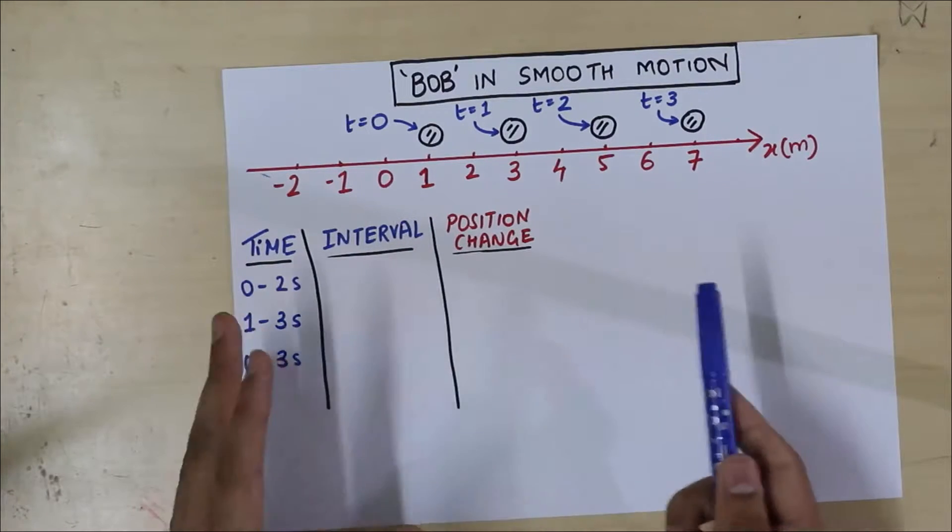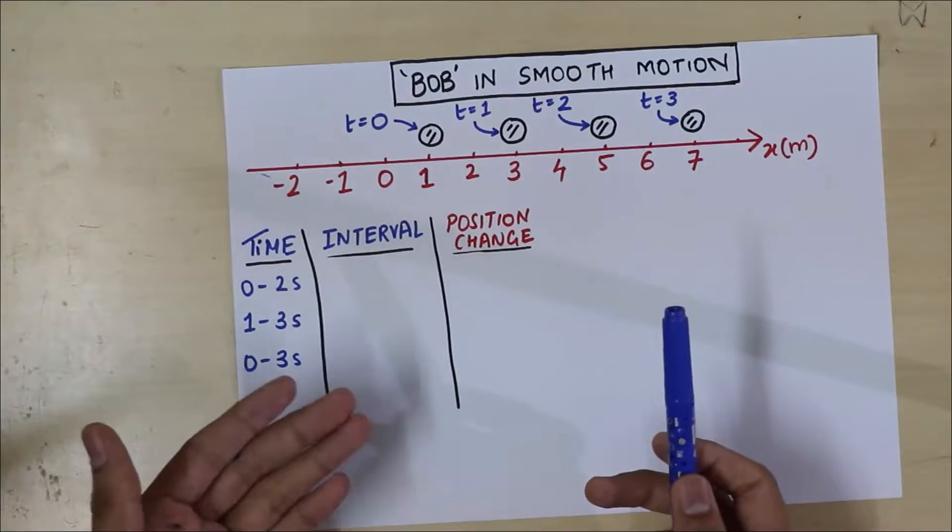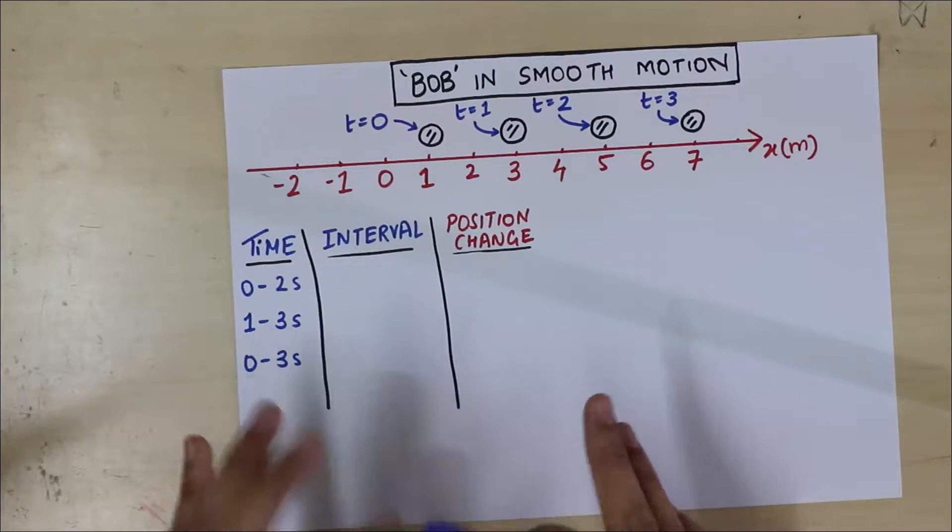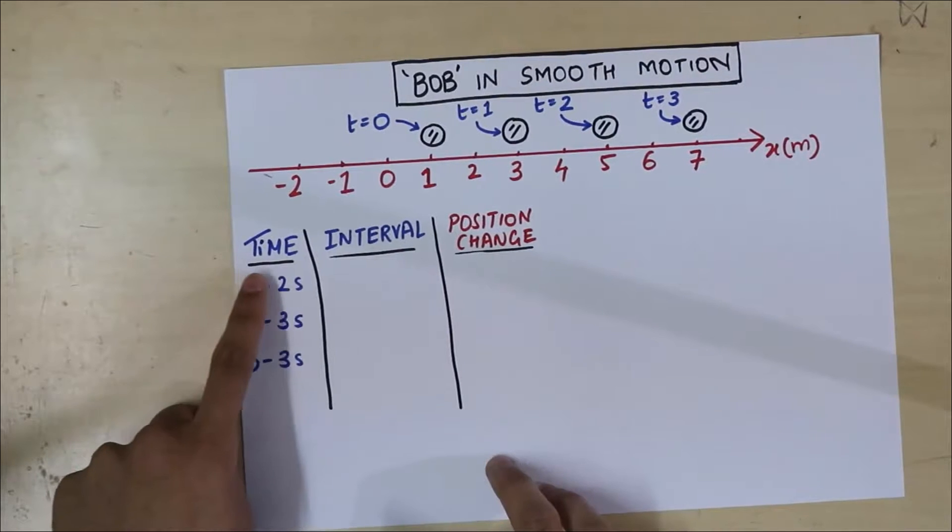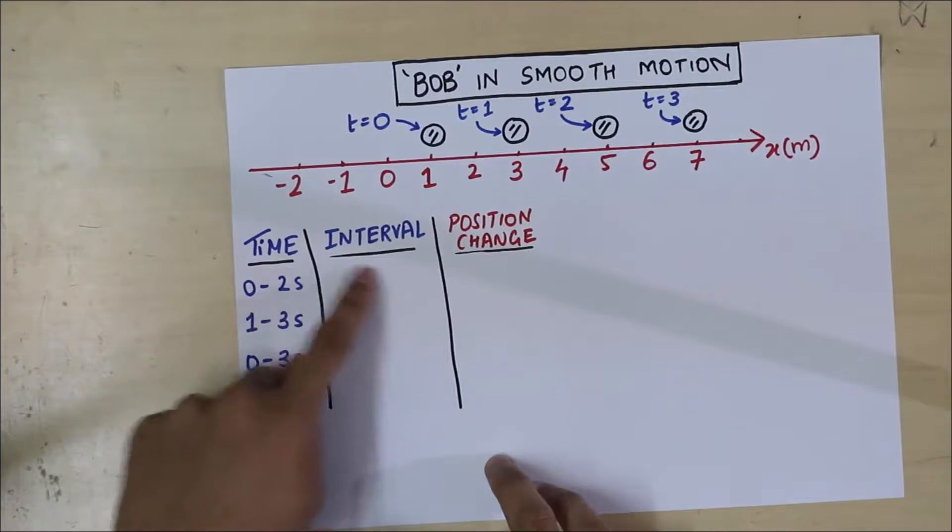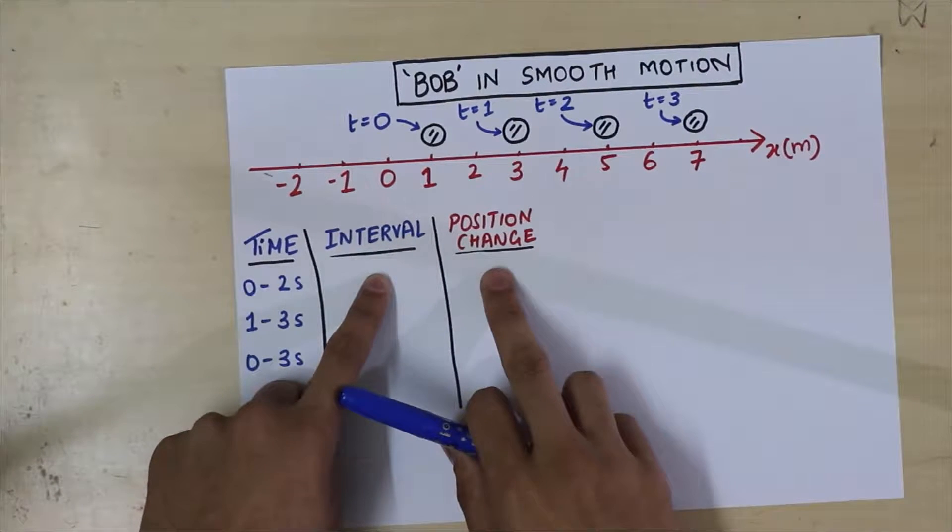What is so special about this motion? I mean, you could see that it was smooth, but what is the speciality of smooth motion in mathematical terms? Well, what we're going to do is we're going to look at the time interval, and we're going to track its change in position.